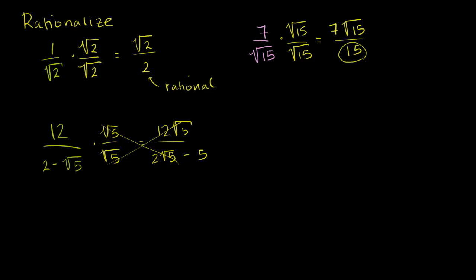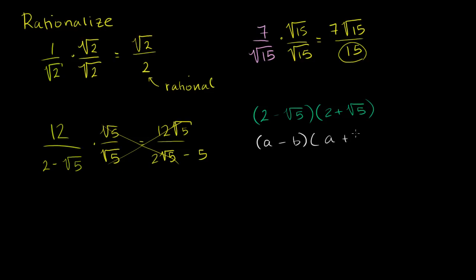What you do here is use our skills when it comes to difference of squares. Let's take a little side here. We learned a while ago that if you had 2 minus the square root of 5, and you multiply that by 2 plus the square root of 5, this is the exact same pattern as a minus b times a plus b, which is a squared minus b squared. This is a times a, which is a squared; a times b, which is ab; minus b times a, which is minus ab; and then negative b times positive b, negative b squared. These cancel out, and you're just left with a squared minus b squared.